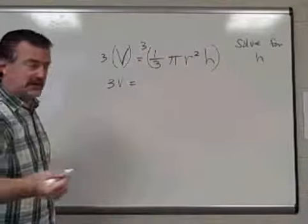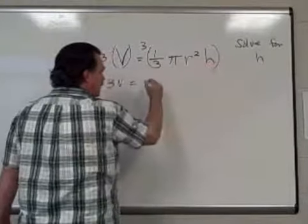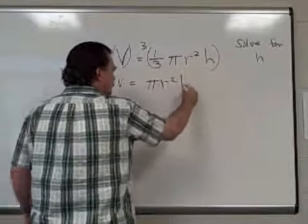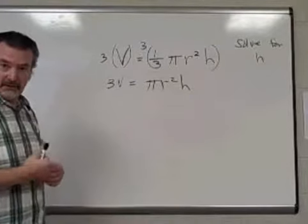3 times 1 third is 1, so I'm just multiplying 1 times pi r squared h, which just gives us pi r squared h.